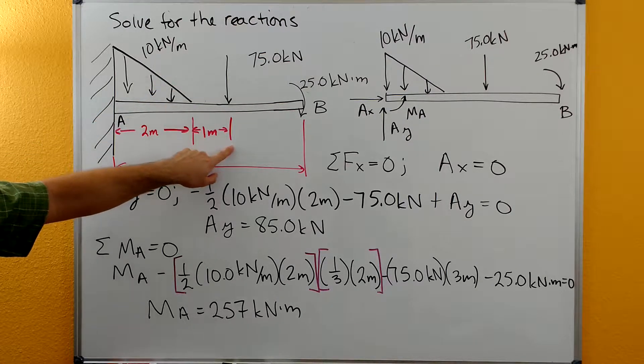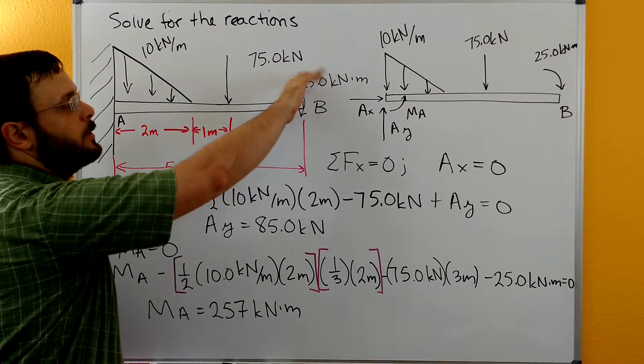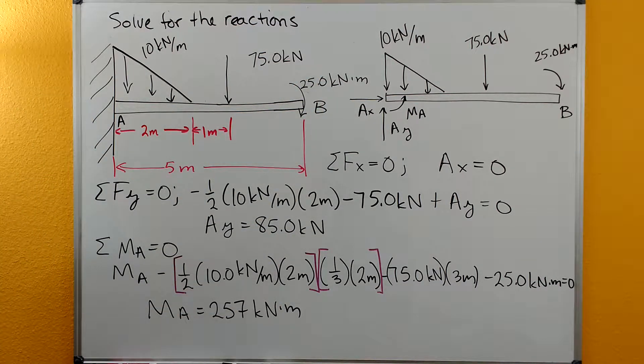Then we have a 75 kilonewton concentrated force that acts here another one meter over, and then we have a 25 kilonewton meter couple moment that's negative or clockwise at point B.